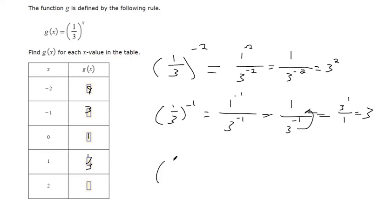And if you plug in 2, then you can square the top and square the bottom. 1 squared is 1, and then 3 squared is 9, so 1/9 would be here.